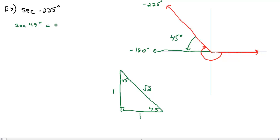Secant is the reciprocal of cosine, and cosine is adjacent over hypotenuse, so secant is going to be hypotenuse over adjacent. Since the given angle is 45, the hypotenuse is the square root of two and the adjacent is 1. It doesn't matter which 45-degree angle you use because it'll give us the same answer.